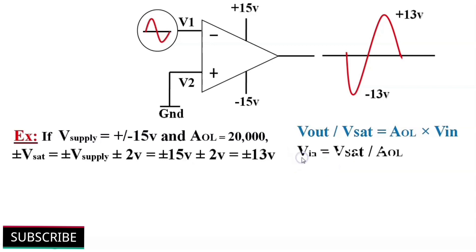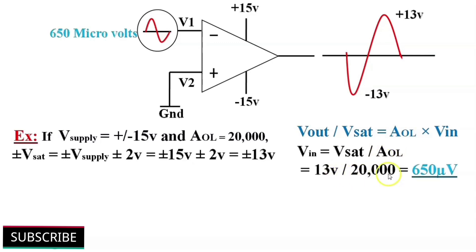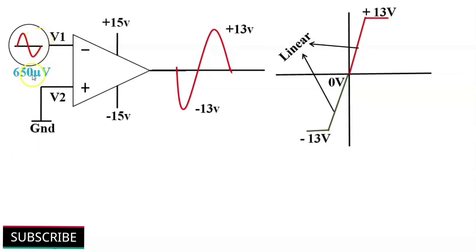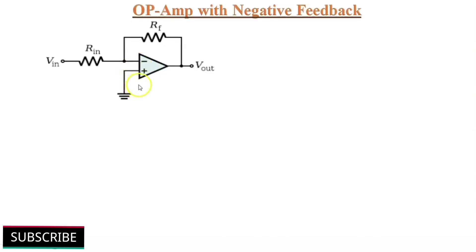We have to find out Vin. The formula for Vin is equal to Vsat divided by open loop voltage gain. That is equal to 13 volts divided by 20,000, which gives 650 microvolts. If our input voltage exceeds 650 microvolts, then our op-amp will be driven into saturation and will become non-linear. This limit of 650 microvolts at the op-amp's input is very small or negligible, so our linear region will also become very small. So to control this high open loop voltage gain or to increase this linear region, the op-amp is almost always operated with negative feedback.